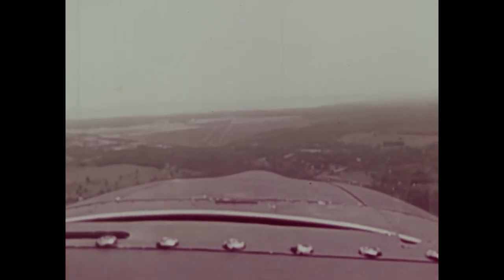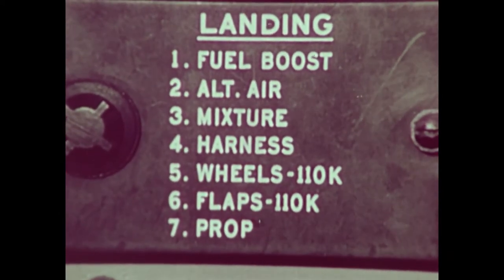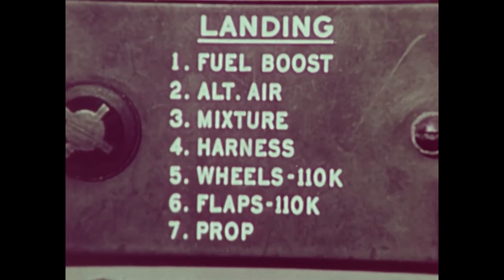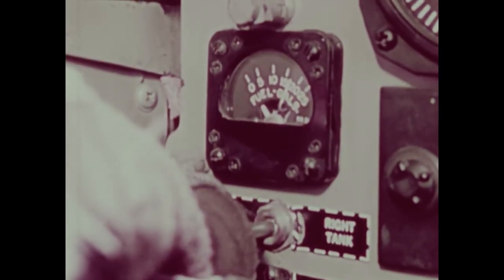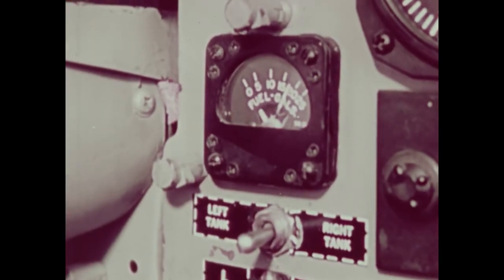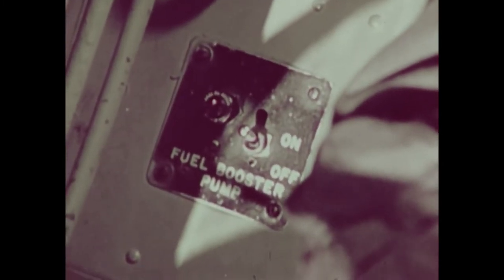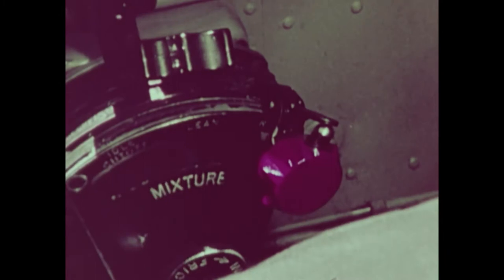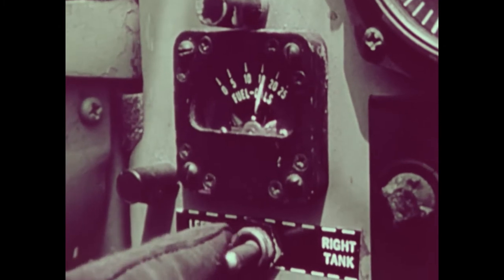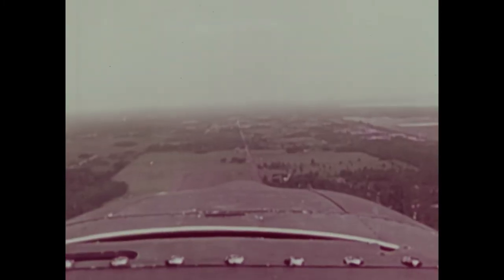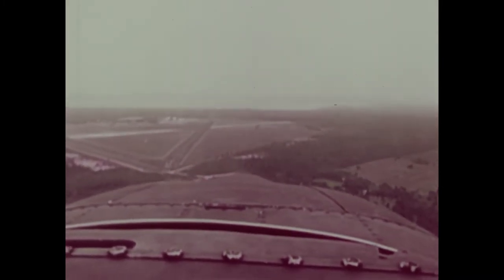When the brake pattern is in effect, complete the landing checklist except for wheels, flaps and prop. Check the quantity of gas in the right and left tanks and report fuel boost pump on. Alternate air in, mixture rich, harness locked, and the quantity of gas in both tanks. Establish a one-mile straightaway into the duty runway headed upwind. Enter the one-mile initial point aligned with the right-hand edge of the duty runway at the designated altitude in normal cruise.